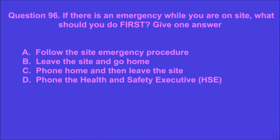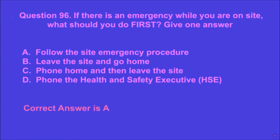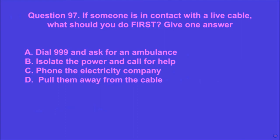Question 96: If there is an emergency while you are on site, what should you do first? Give one answer. A: follow the site emergency procedure, B: leave the site and go home, C: phone home and then leave the site, D: phone the Health and Safety Executive (HSE). A is the correct answer.